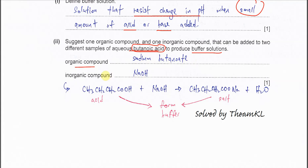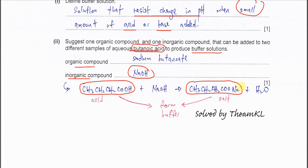Alternatively, we can add the inorganic compound sodium hydroxide. Sodium hydroxide will react with butanoic acid to form the salt. However, sodium hydroxide must be the limiting reagent and butanoic acid must be in excess, because a buffer needs both the acid and the salt formed. When sodium hydroxide is added, the salt forms, and with the remaining butanoic acid, a buffer solution is produced.